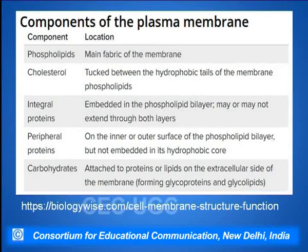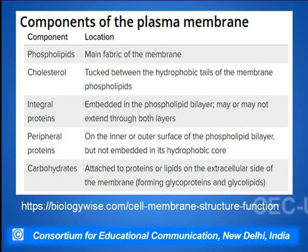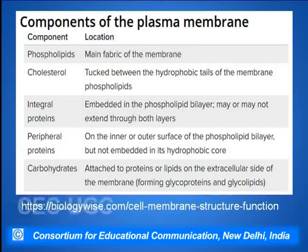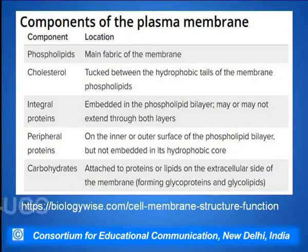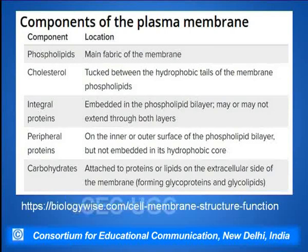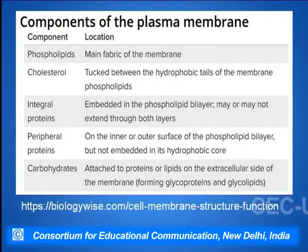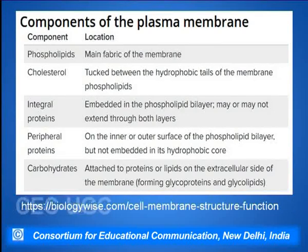The plasma membrane is made up of various components. The first component is the phospholipid, which is basically the basic fabric of the membrane. Then there are cholesterols, tucked between the hydrophobic tails of the membrane phospholipids. Then there are integral proteins, embedded across the phospholipid bilayer, and peripheral proteins present on either the inner or outer surface of the phospholipid bilayer.